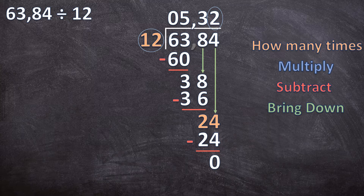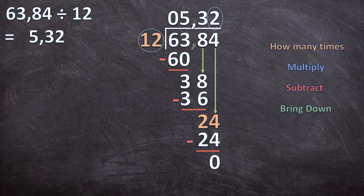Our answer for 63,84 divided by 12 is 05,32. Notice that the zero in front of 5,32 doesn't add value to the number, so we can just leave that zero out — the answer is 5,32. Now let's look at the last example, one that does not end exactly at zero.